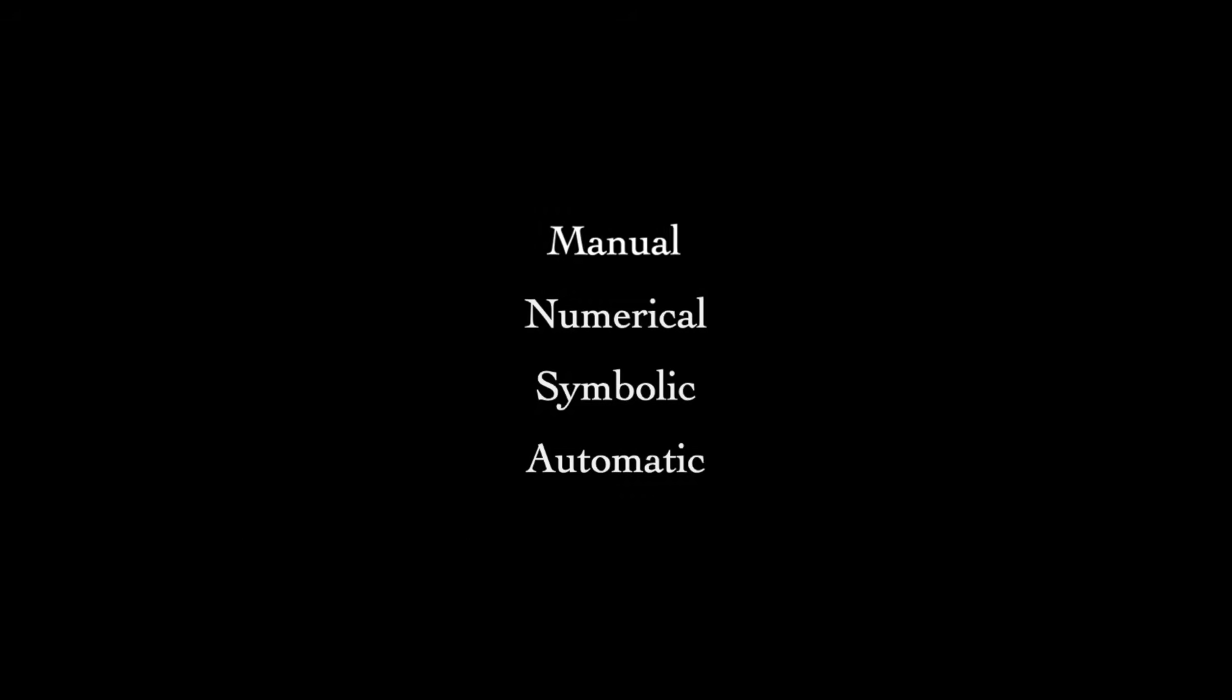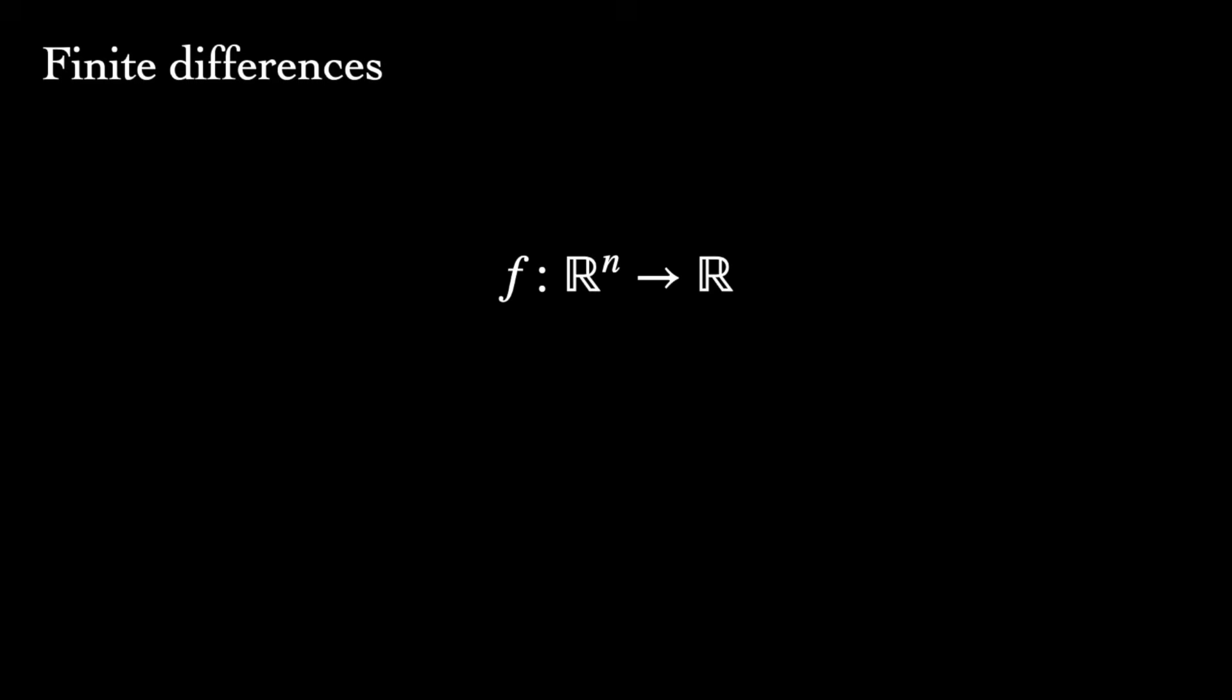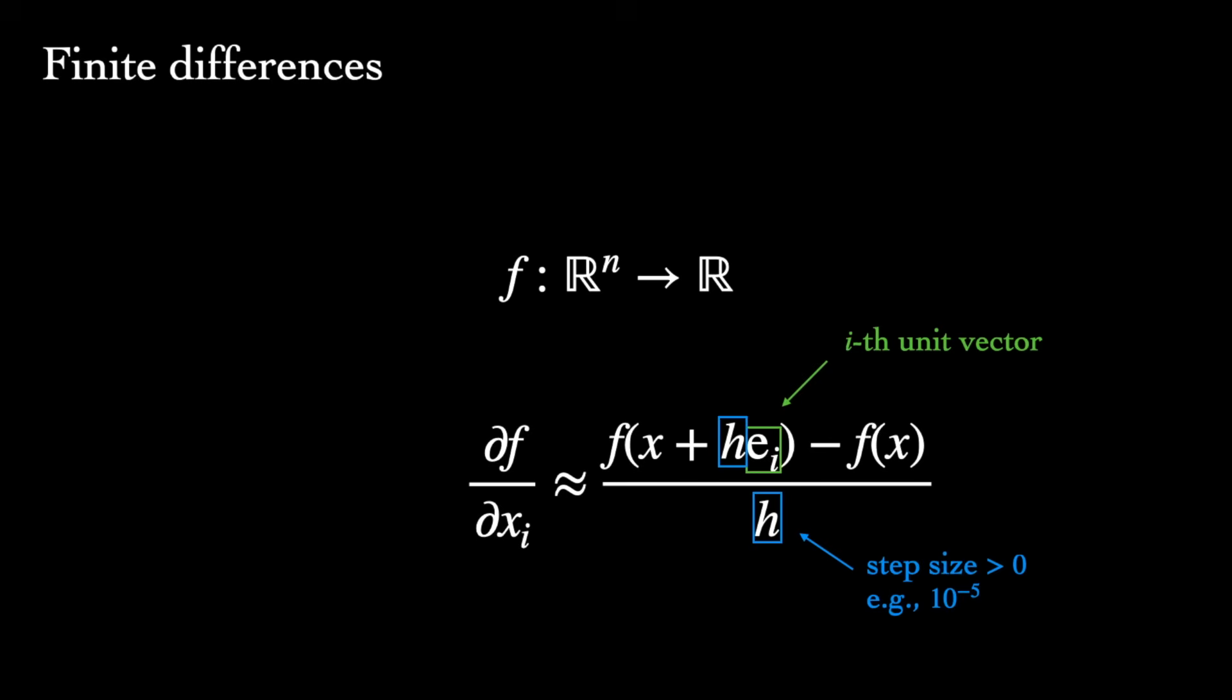Automatic differentiation, as its name suggests, is one of these, but it's not the only one. Another is numerical differentiation, which uses the method of finite differences to approximate derivatives. The simplest version intuitively follows from the limit definition of the derivative. Say we have a scalar-valued function f. For a partial derivative with respect to xi, we set up a quotient where in the numerator, we subtract two evaluations of the function at nearby points, x plus hei and x. ei is just the unit vector along the ith axis, and h is a step size, typically a small fraction.